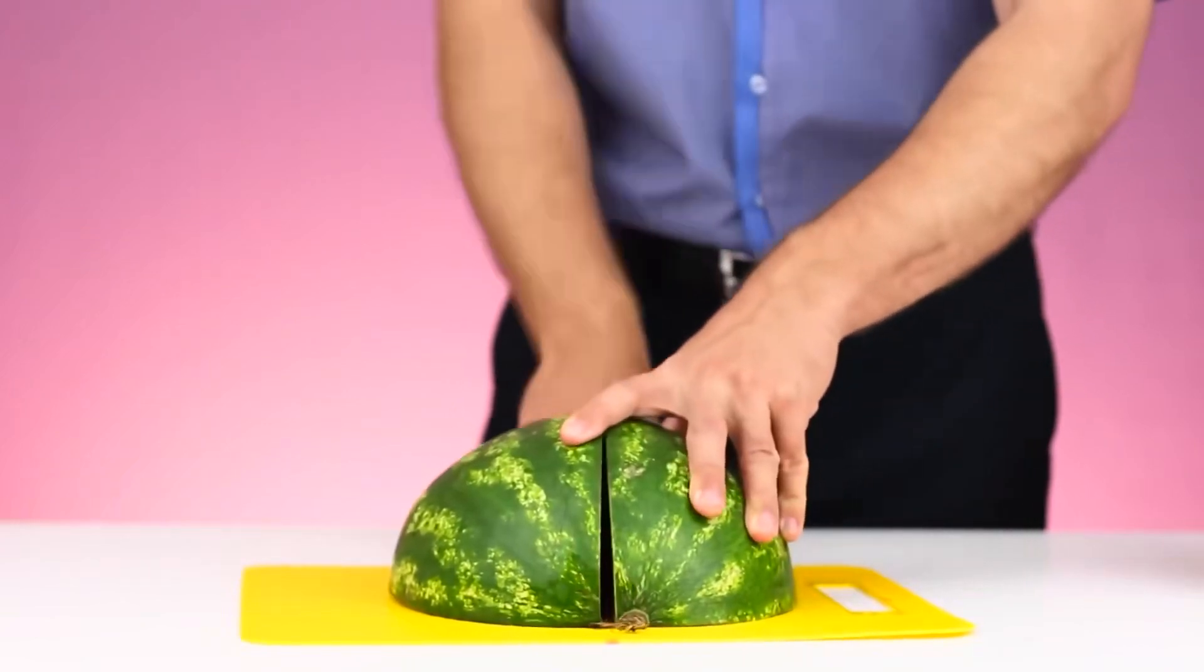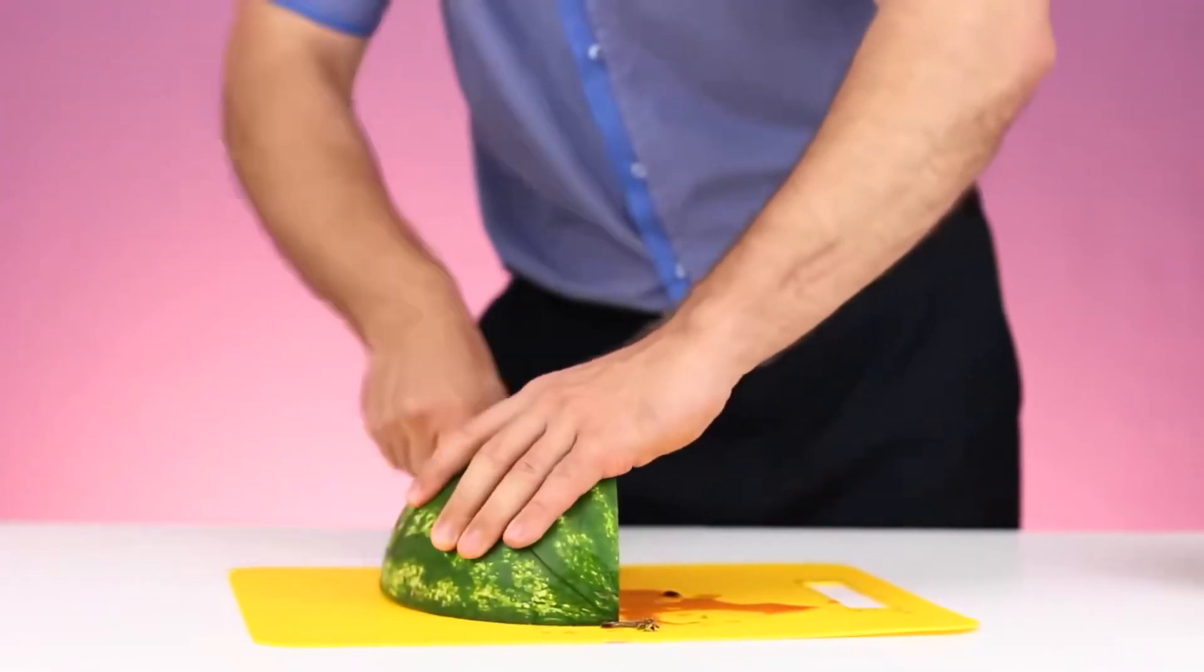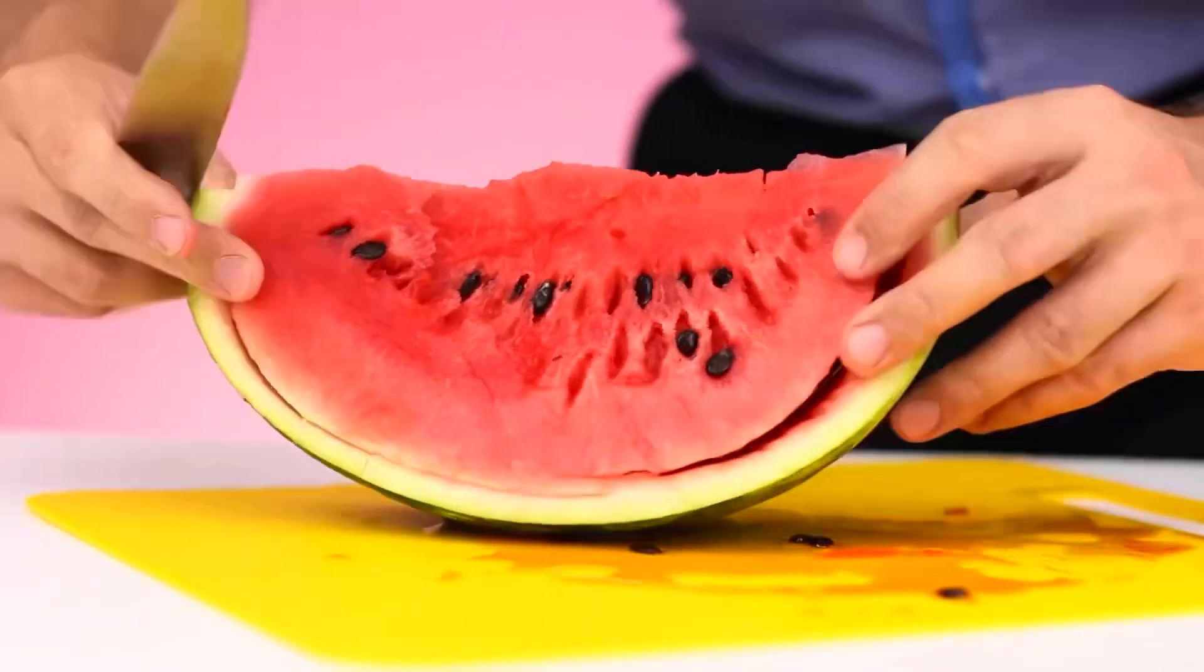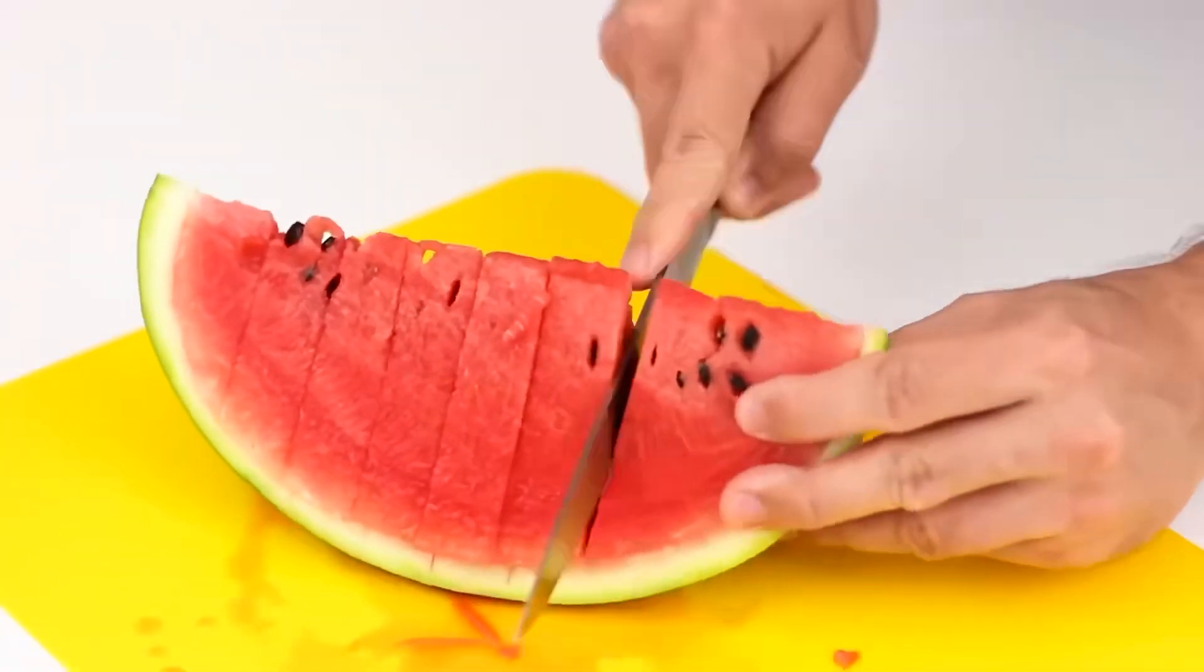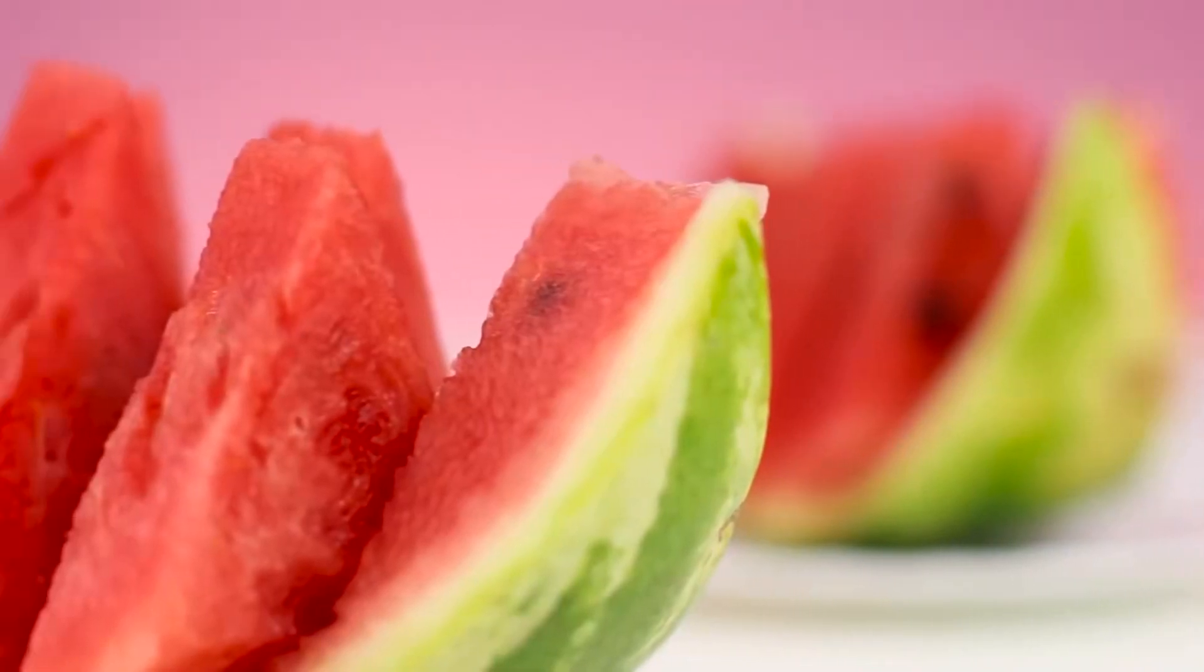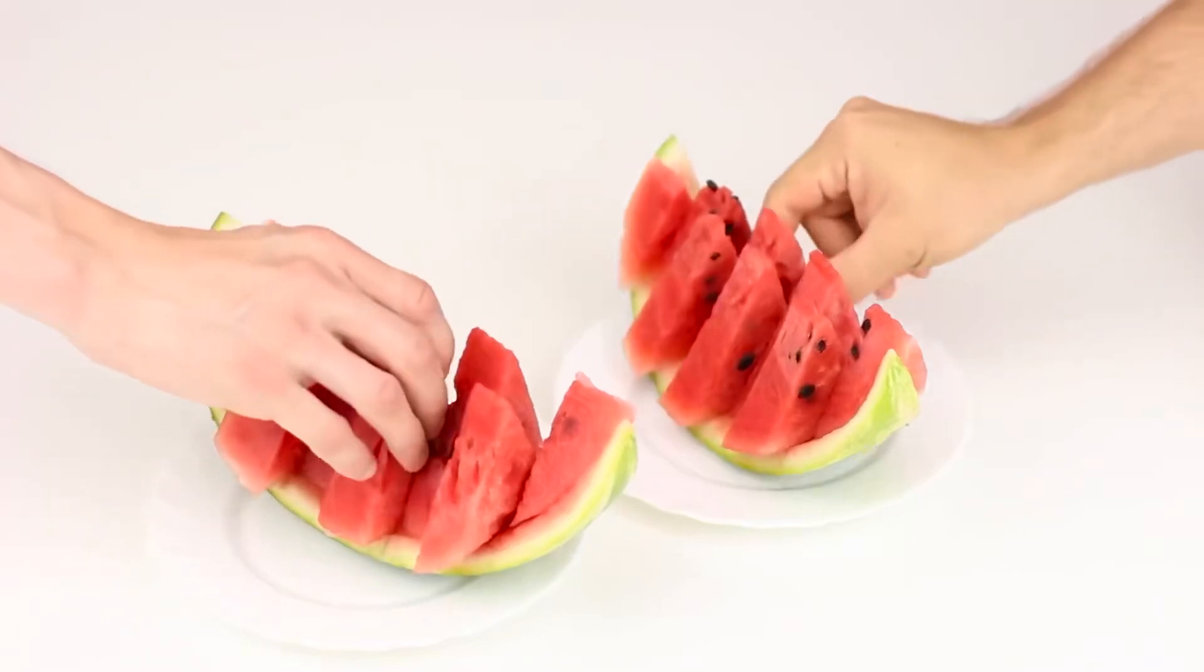For the first method, divide the watermelon into eight pieces. Cut the pulp from the crust. Now we'll make several vertical incisions and slightly shift the resulting pieces inside the watermelon rind.